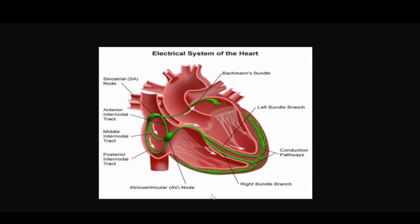After that, the electrical current moves through the left and right bundle branches out through the Purkinje fibers rather rapidly, to contract the ventricles and push blood out to the body.